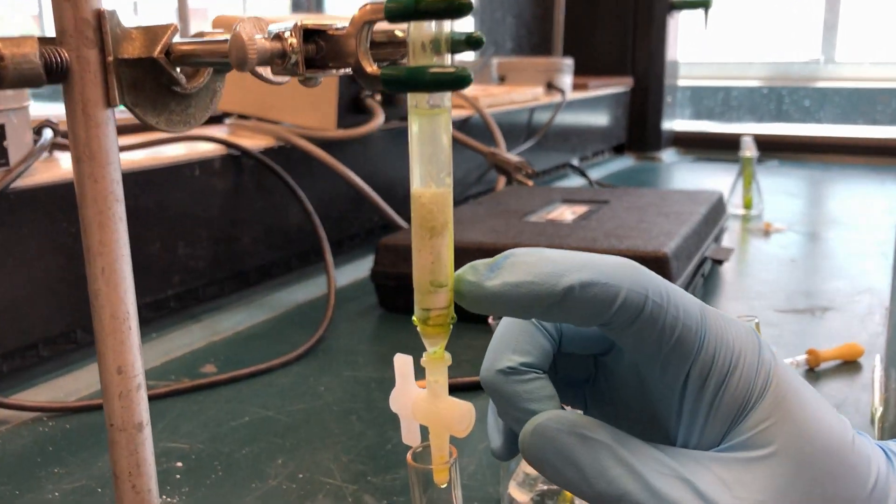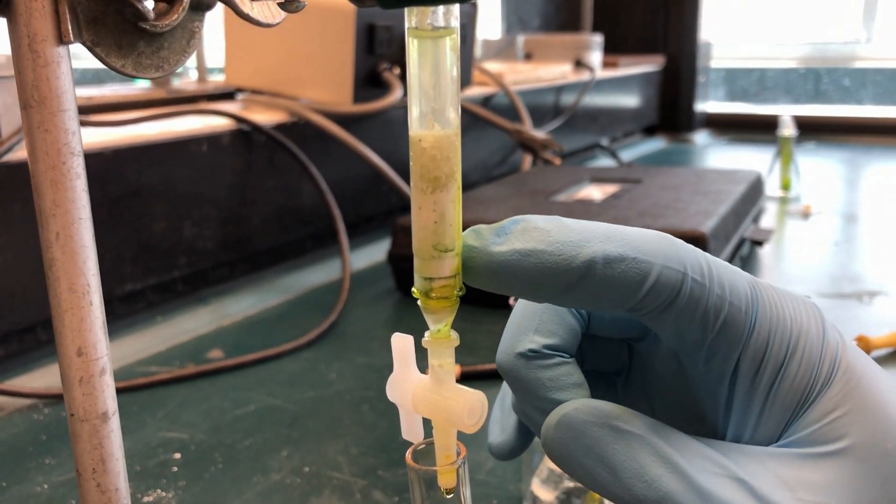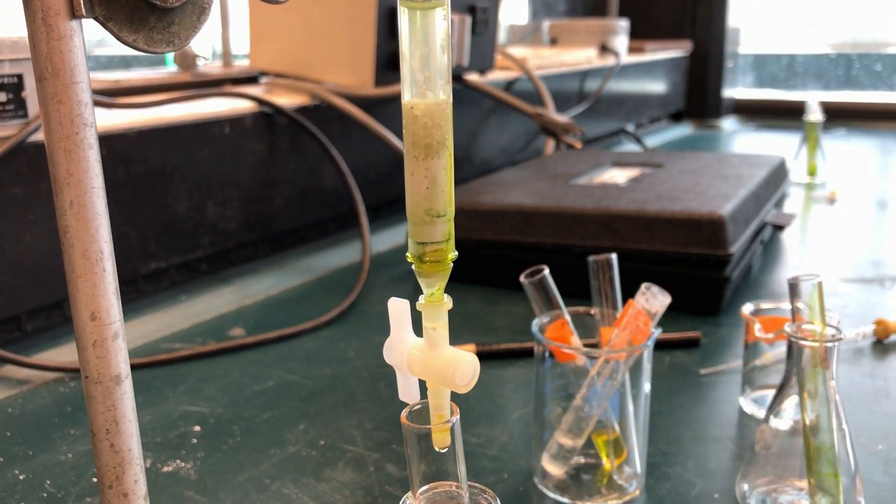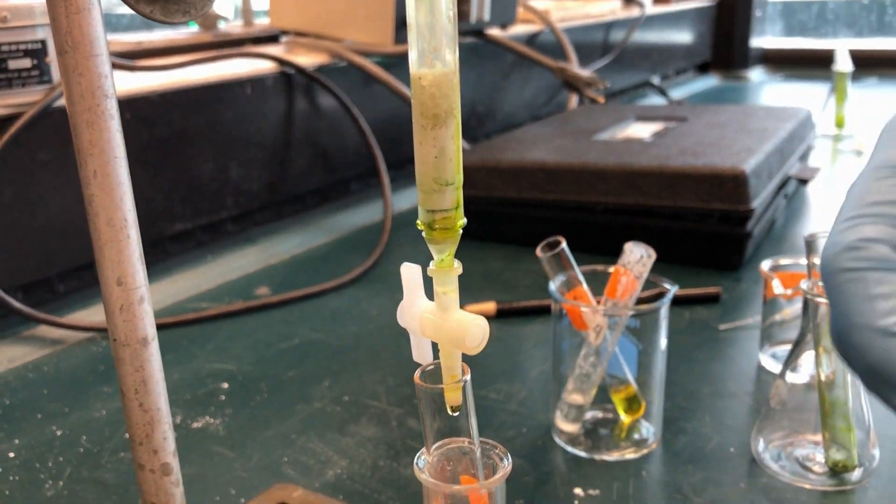Here we can see that the green is moving towards the bottom of the column. We switch collection tubes to collect the green pigment.